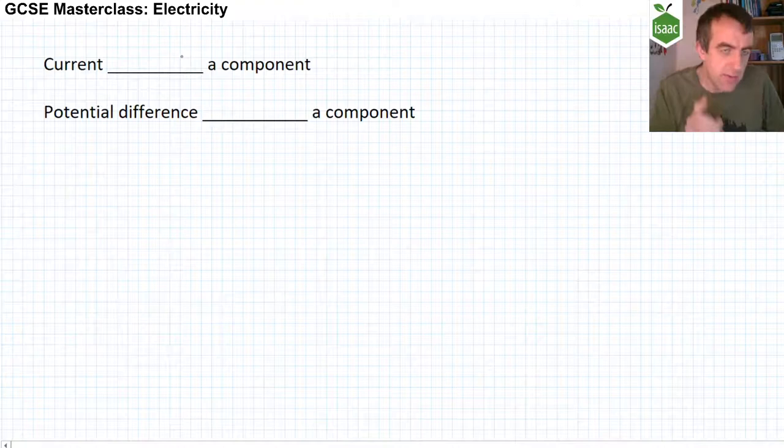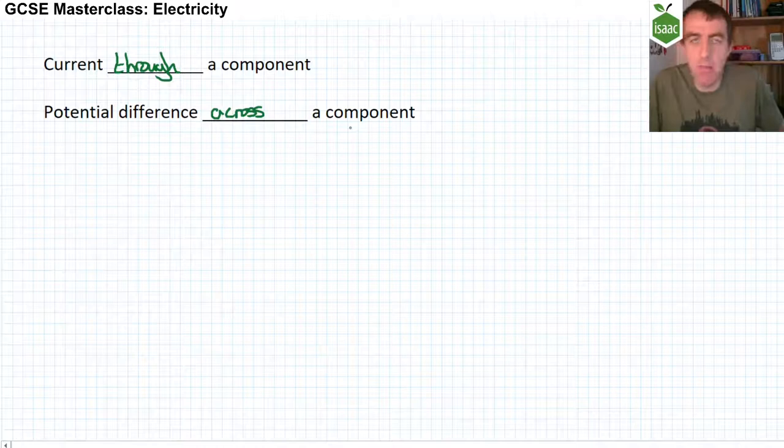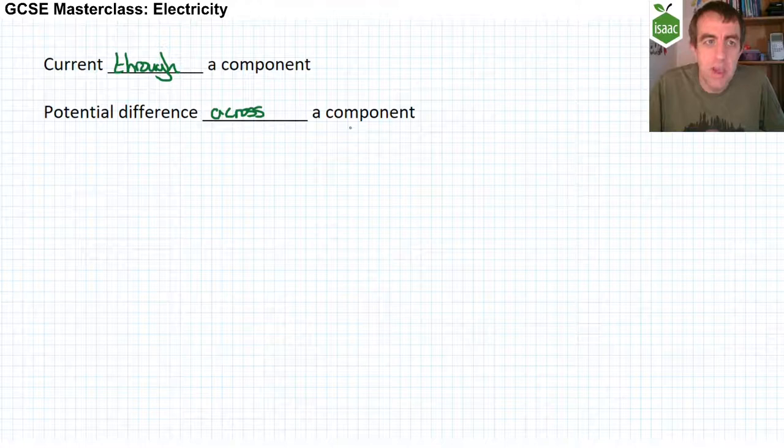In a circuit, it is very important to get your prepositions right. The current you measure is the current through a component, and the potential difference you measure is a potential difference across a component. We don't say the current in a component, or the current across a component, or the potential difference in or through a component. We say the current through a component and a potential difference across a component.